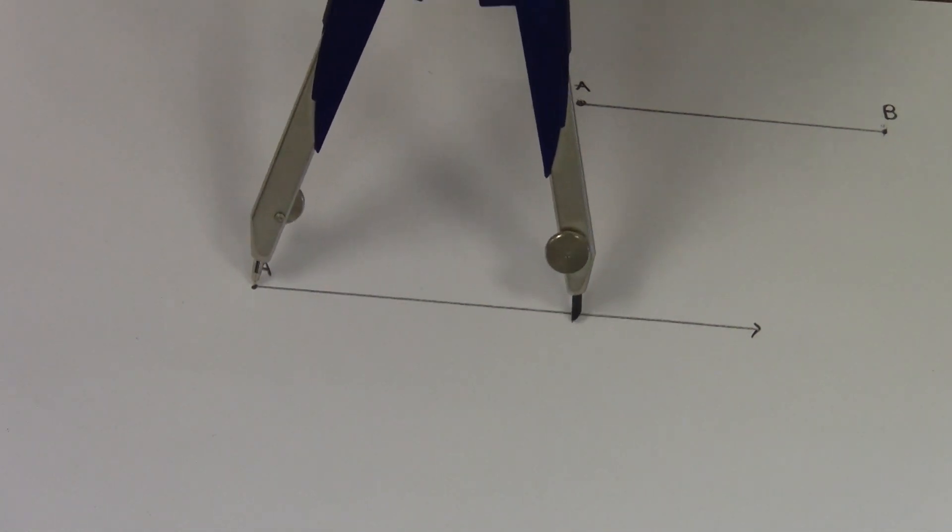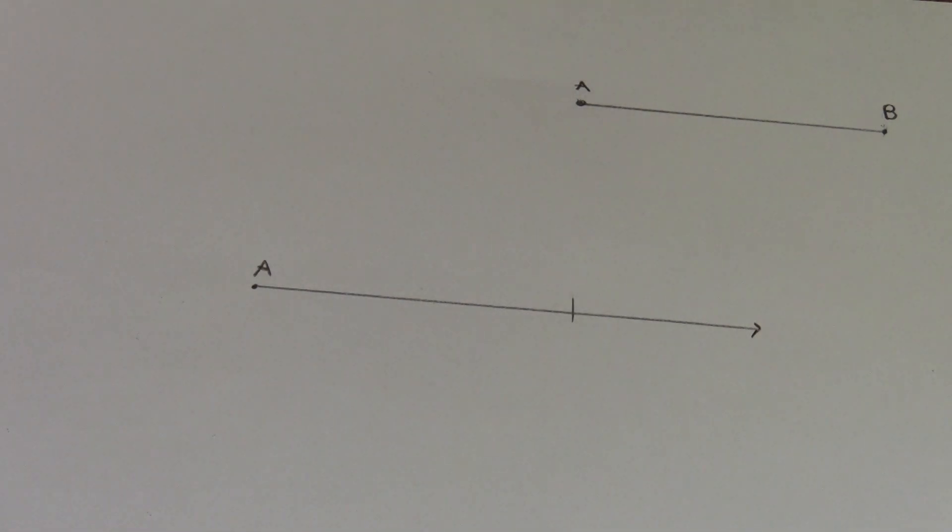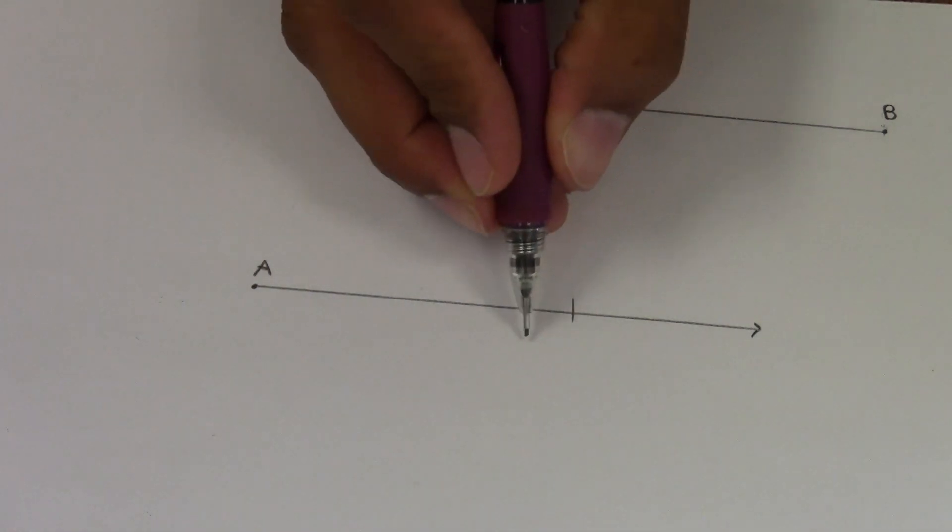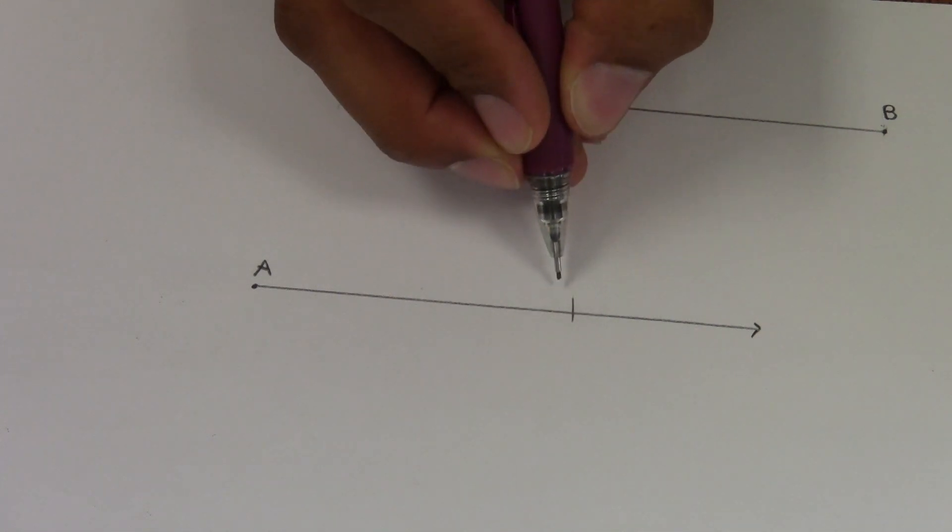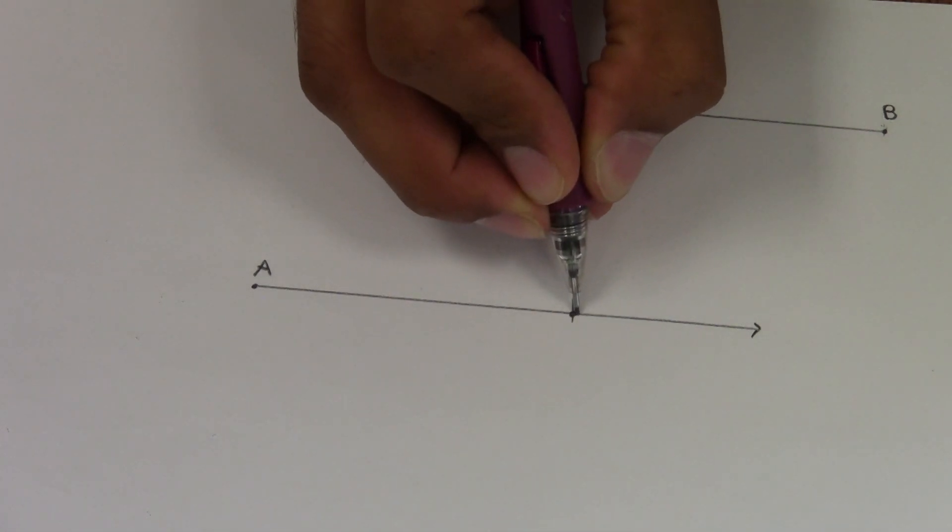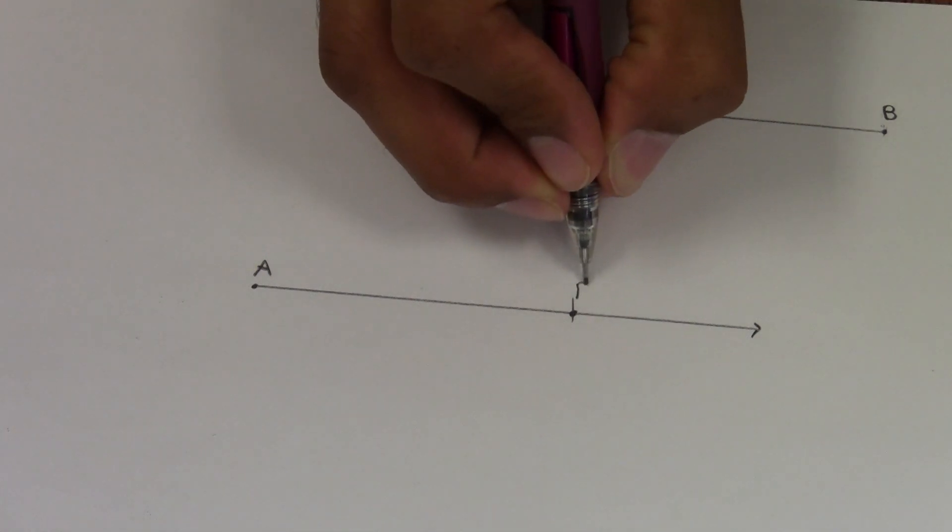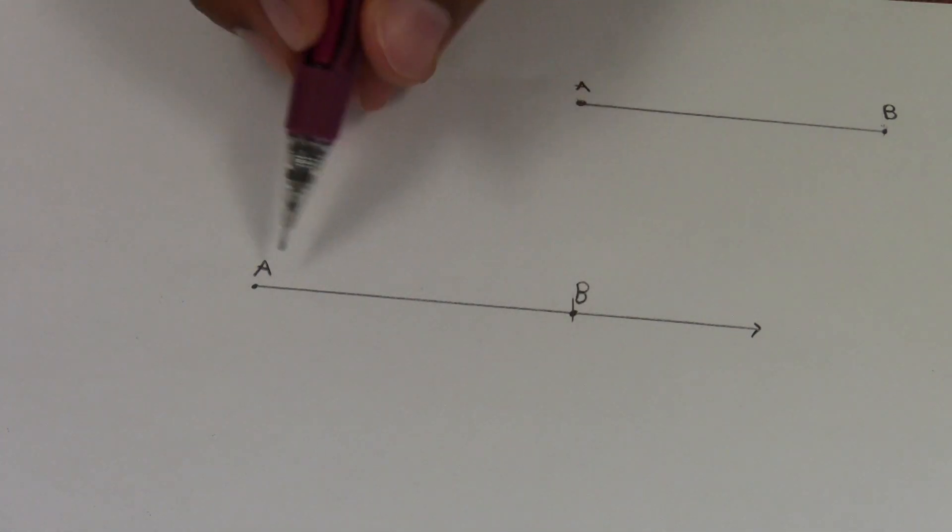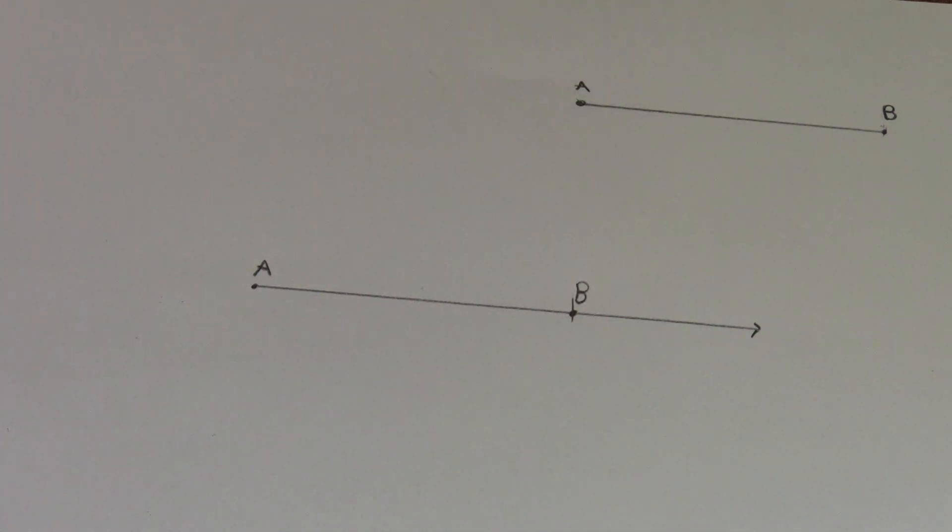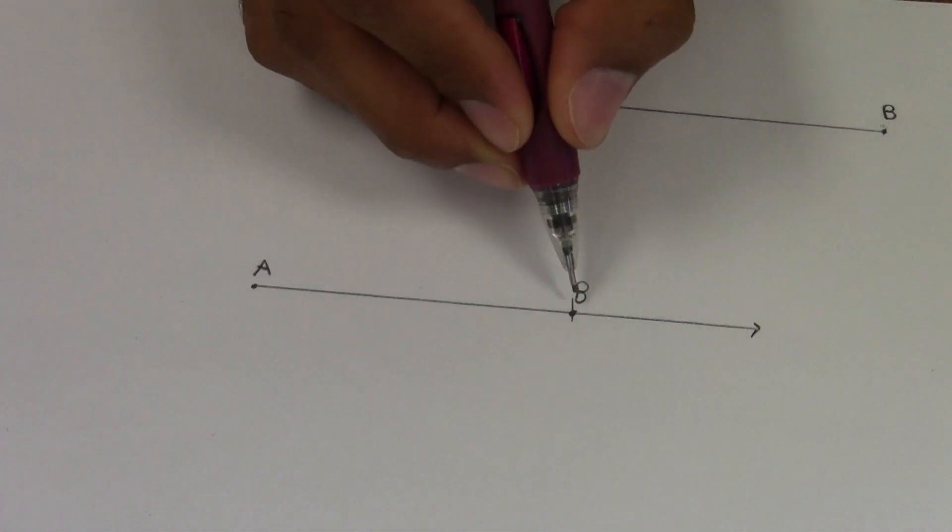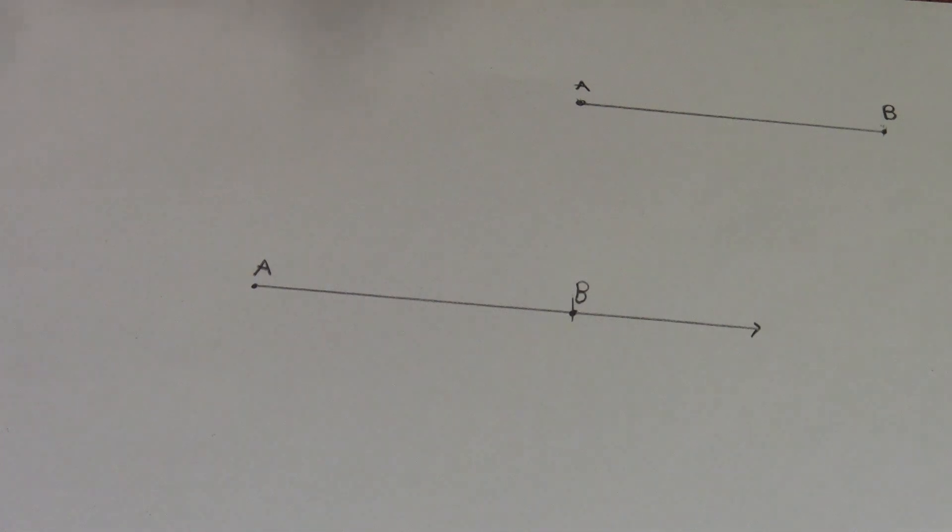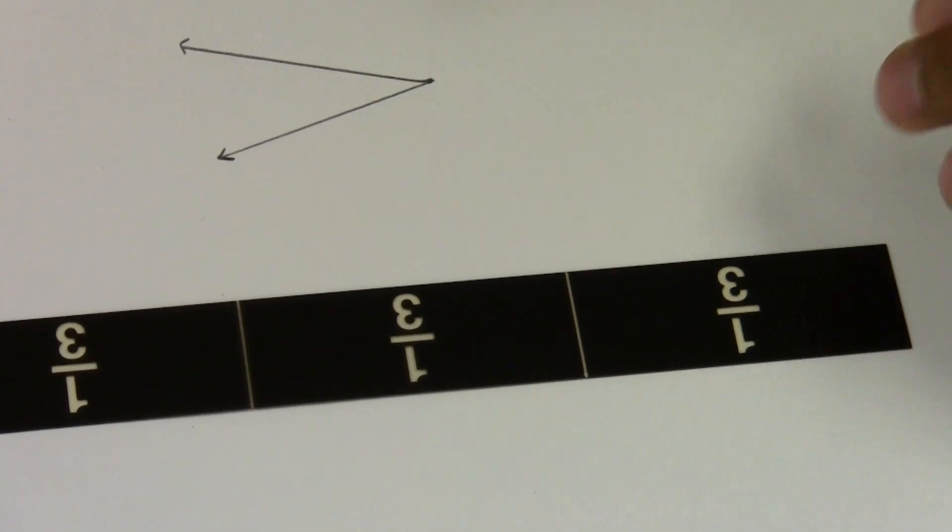I'm going to mark off where B goes. I know that B is around here. Where it intersects your ray, that's where B goes. And you have now duplicated a line segment. This is line segment AB, and once again, this is line segment AB.